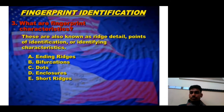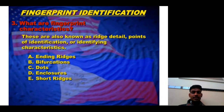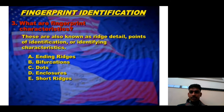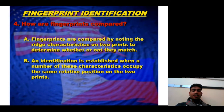Fingerprint characteristics — also known as ridge detail points or identification points — include ending ridge, bifurcation, dots, enclosure, and short ridge, among many other patterns. These ridge characteristics form the basis of fingerprint analysis.